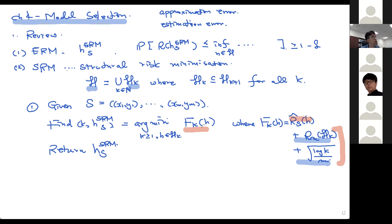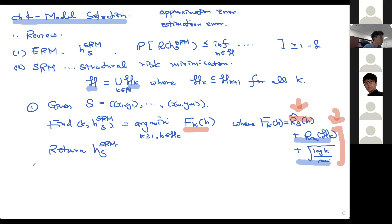The optimization objective balances approximation and estimation error at the same time. It allows us to use a rich hypothesis set to minimize the first component, but at the same time prevents us from using too rich a hypothesis set because if our hypothesis set becomes too complicated, we pay a high price in terms of estimation.